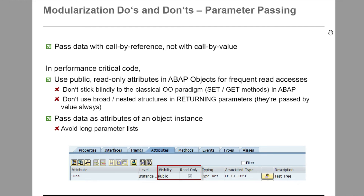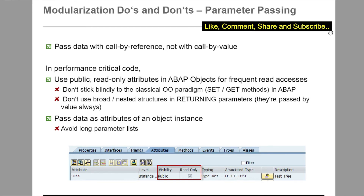Pass data with call by reference and not by call by value. In performance critical code, use public read-only attributes in ABAP objects for frequent read accesses. Don't stick blindly to the classical object-oriented paradigm in ABAP. Don't use broad nested structures in returning parameters. Always try to pass data as attributes of an object instance and avoid long parameter lists. An example is given below.